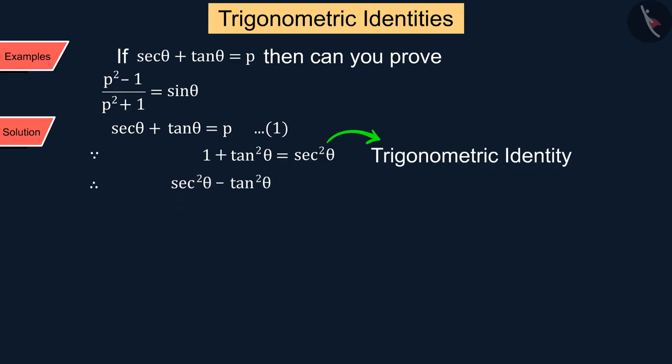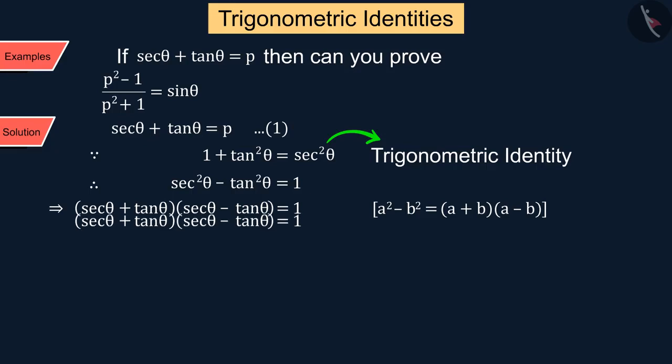From equation we know that sec θ + tan θ equals p, which is substituted here. We get sec θ - tan θ equals 1/p, which is represented by equation 2.